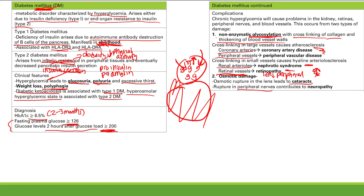Treatment differs by type 1 versus type 2. In type 1, the whole problem is you're not making insulin. Fortunately, now we have synthetic insulin — we can make insulin and give it to people. So for type 1, you just give them insulin. Type 1 is insulin dependent, so you treat them with lifelong insulin replacement.